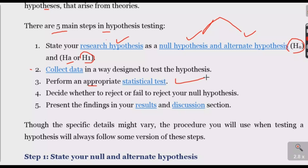The step is to choose the appropriate statistical test and calculate the test statistic. Step 4 is to accept, prove, or disprove — that is, to reject or fail to reject — the threshold. In statistical tests, we accept and reject based on the results, and then present the findings and interpret the description.